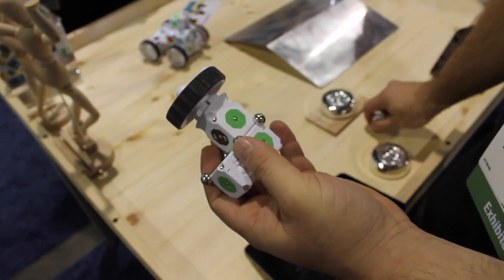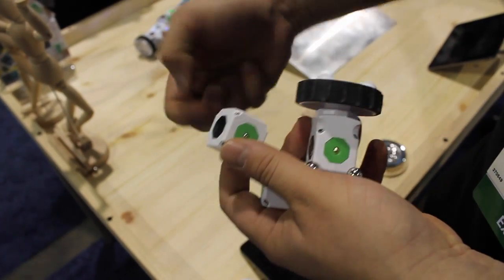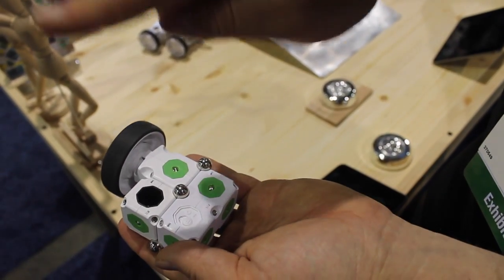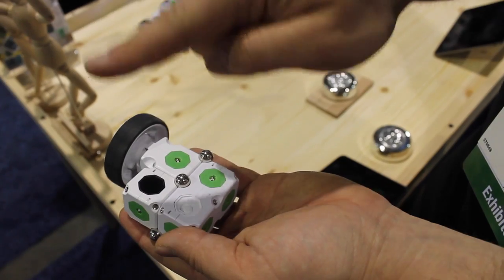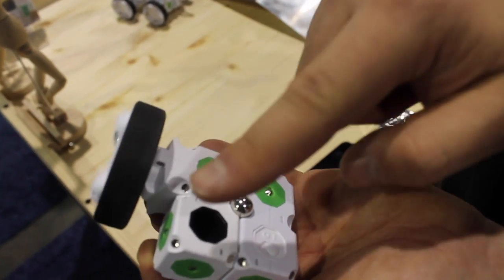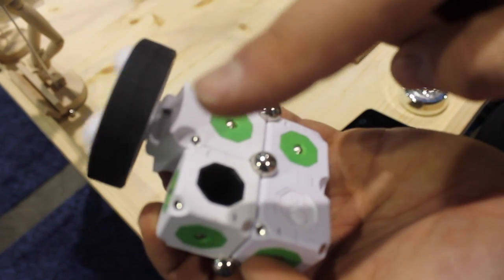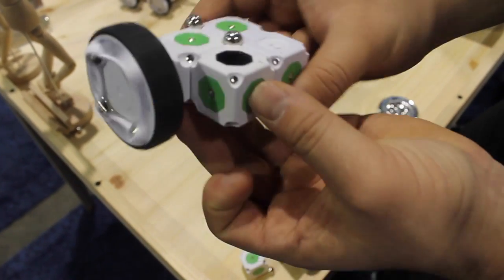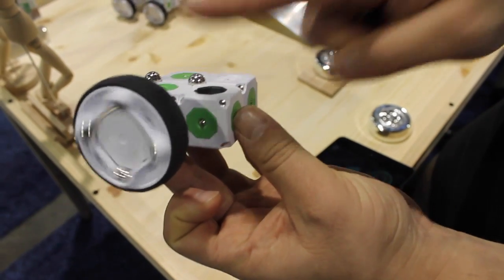So I'm going to swap this sensor out for a proximity sensor, and then rather than reacting to light, we can use proximity. So the closer my hand gets, you can see how it changes the direction of the wheel, and that little proximity sensor lets us create a very specific type of robot.